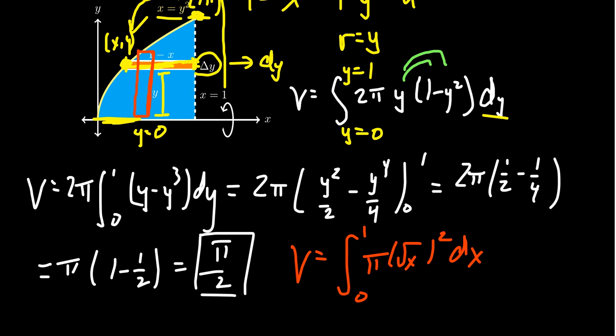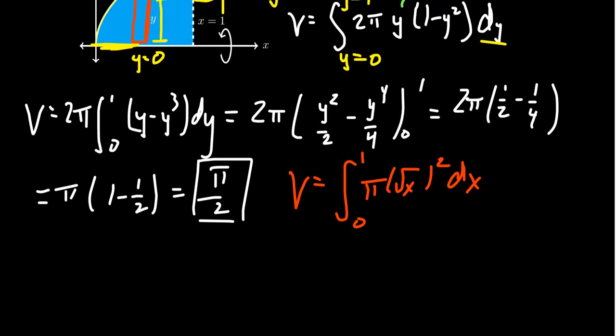And if you simplify it, notice the square of the square root just gives you x. So you end up with the integral from 0 to 1 of pi x dx. Integrating that, you're going to get pi x squared over 2 from 0 to 1. Plug in 0 makes it disappear. Plug in 1 ends up with pi over 2.